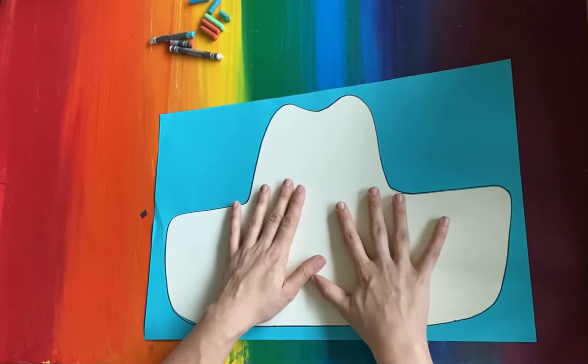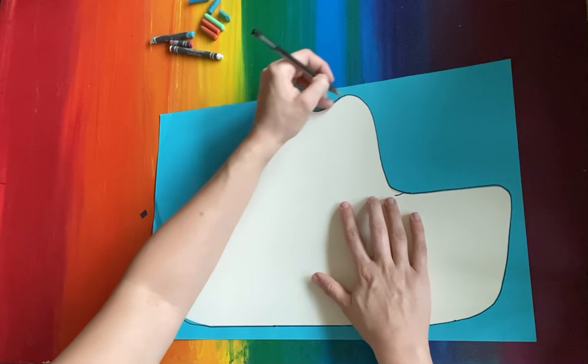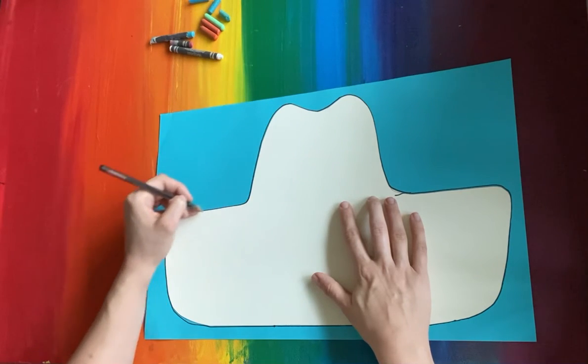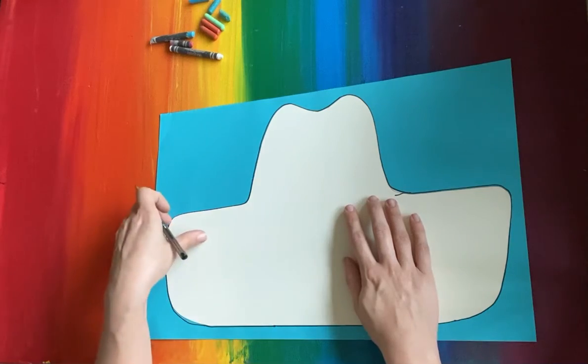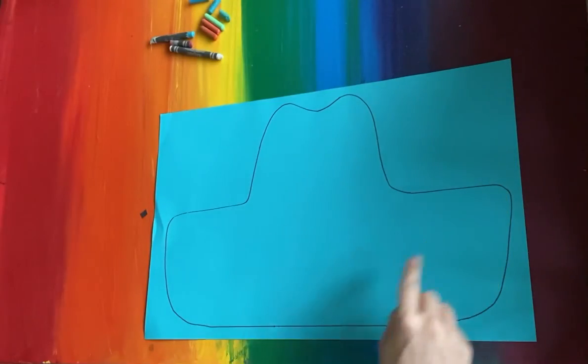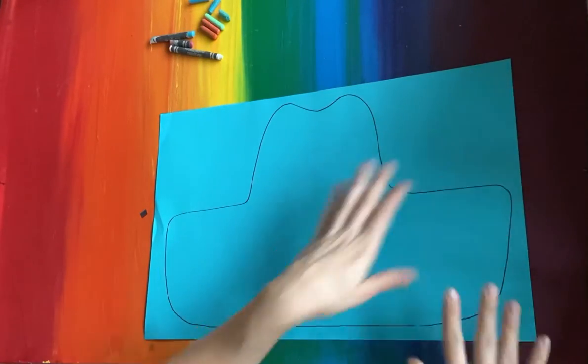You can have a friend hold it steady for you if you're having trouble, and you're gonna carefully outline this tracing tool. When you're done, you remove it and you've got a perfect outline.